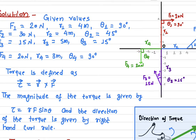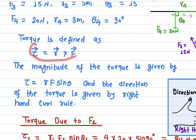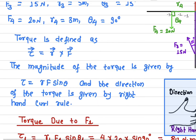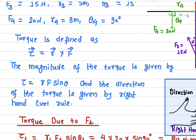All the values are given. Torque is defined as the cross product of the position vector r and the force vector F. Since these two are a cross product, the torque is perpendicular to the plane of r and F — perpendicular to both r and the force. The magnitude of torque is given by r·F·sin(θ), where θ is the angle between r and F. The direction is given by the right-hand curl rule.